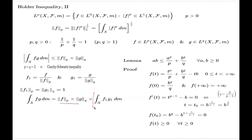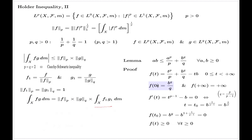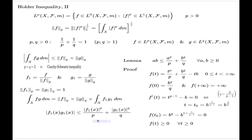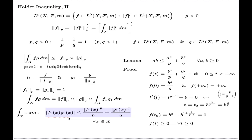All I have to do now is estimate this integral of f1 times g1. For this, I make the following observation: if I apply the lemma inequality for the two numbers f1(x) and g1(x), I will have this inequality for every x in the space X. Now I use the comparison principle and integrate both sides.